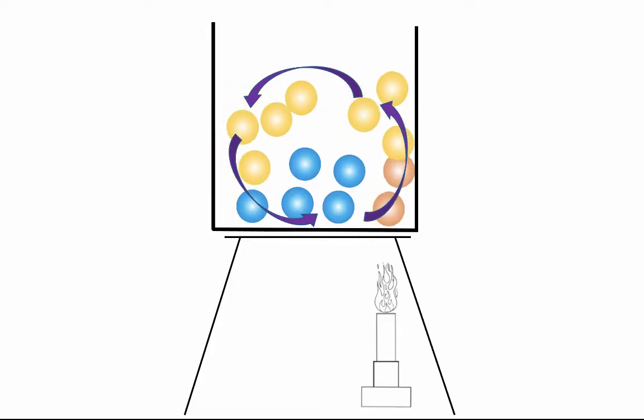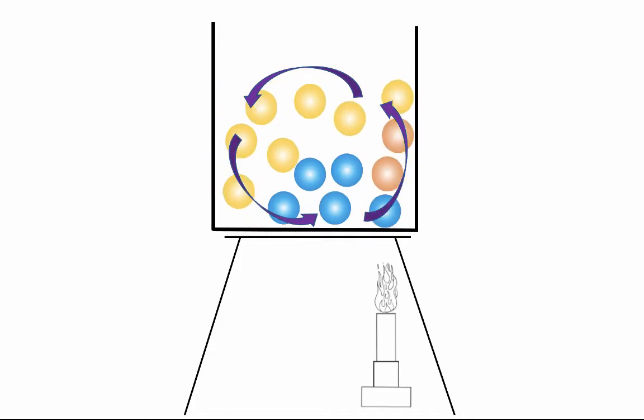All these movements are happening together and they create what we call a convection current, which is represented here by the arrows showing the circular motion of the liquid. The heated particles are rising, they move over to the side, the cooler particles slide in to where the hot ones were, creating this circular motion through the liquid.